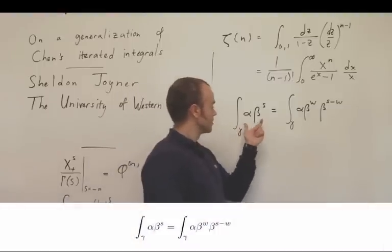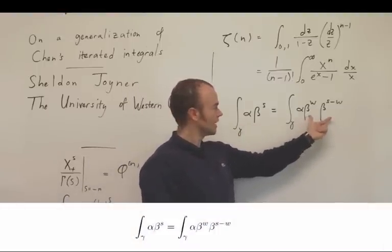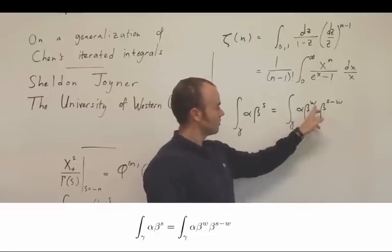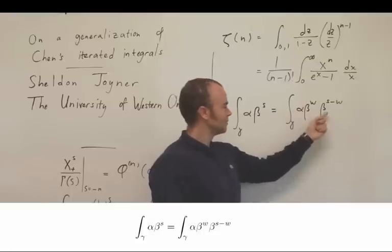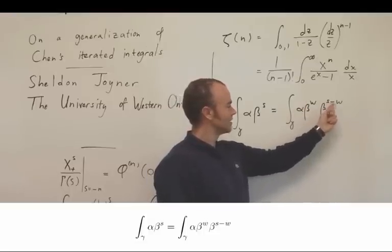We were also able to show that such a gadget satisfies an iterative property of the following kind, where w would be some other complex parameter, and we first integrate alpha beta to the w, and then against beta to the s minus w.